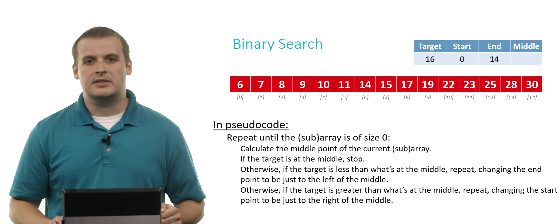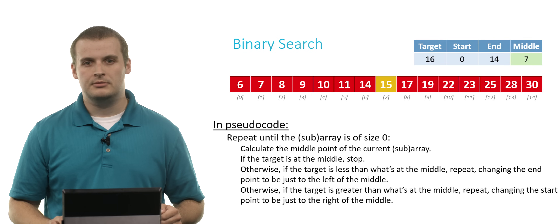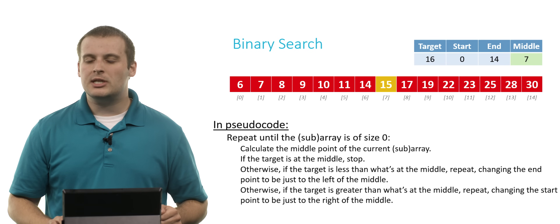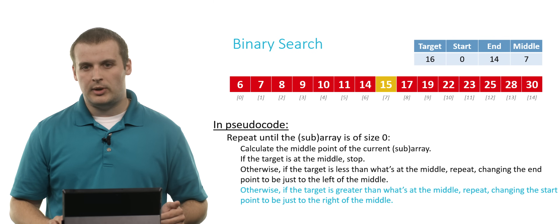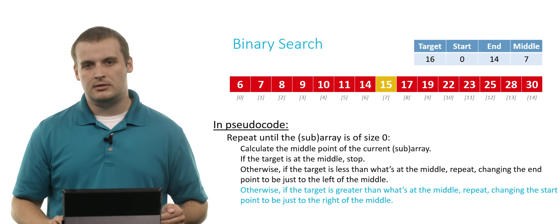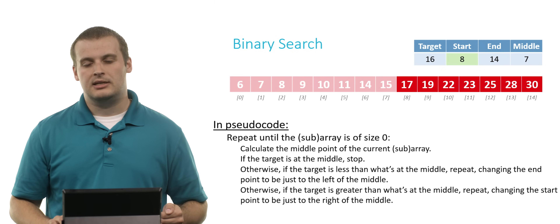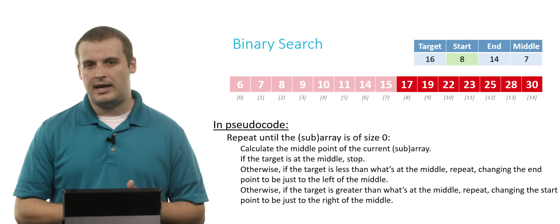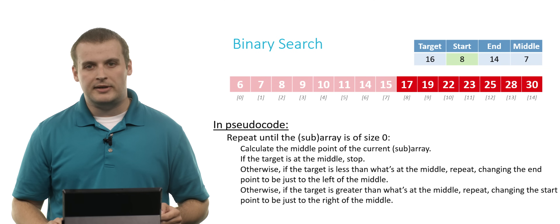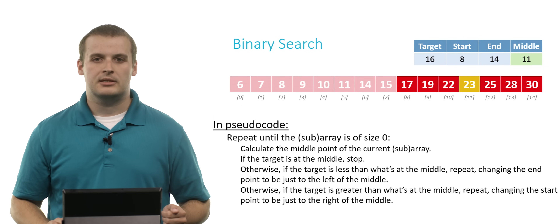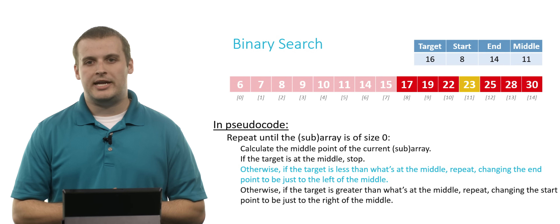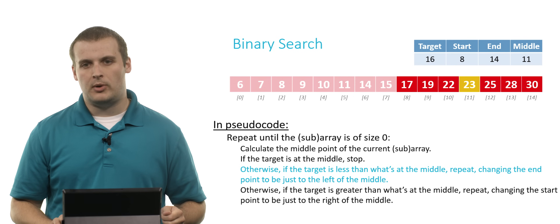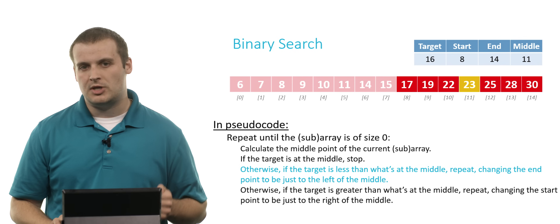The start point is again 0, the end point is again 14. We calculate the midpoint: 14 plus 0 divided by 2 is 7. Is 15 what we're looking for? No — we're looking for a value slightly bigger, so the target is greater than the midpoint. We set the new start to 8. We repeat: 8 plus 14 divided by 2 is 11. Is 23 what we're looking for? No — we're looking for a value less than 23, so we change the endpoint to just left of midpoint 11, making it 10.